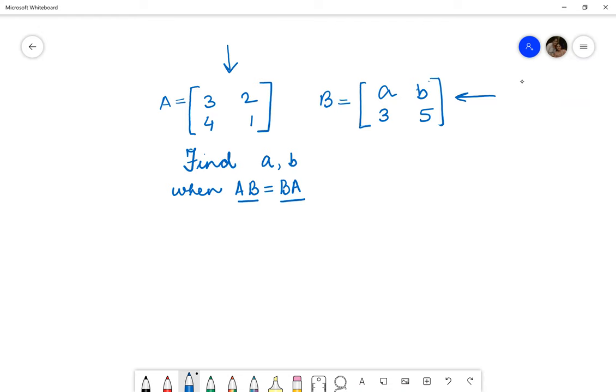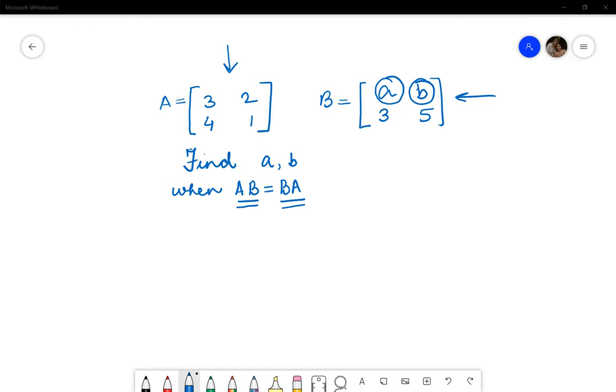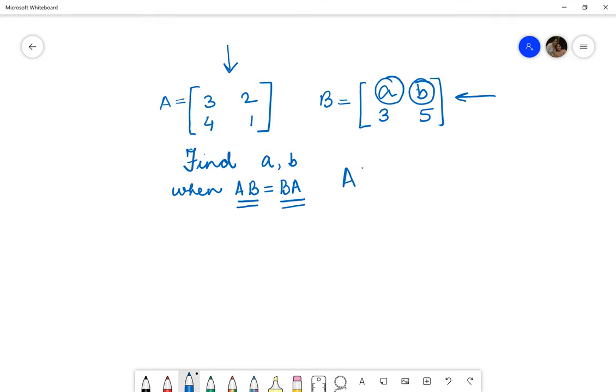We are supposed to find the values of A and B given the condition that AB is equal to BA. Now how to go about this? Firstly, let's just write down this.